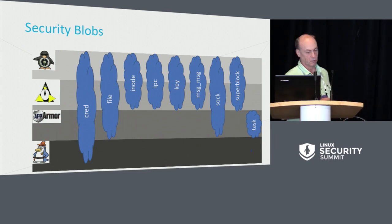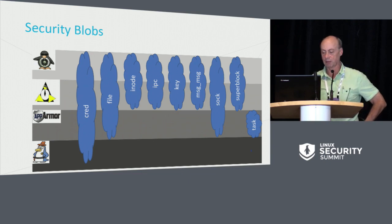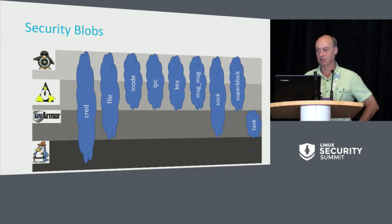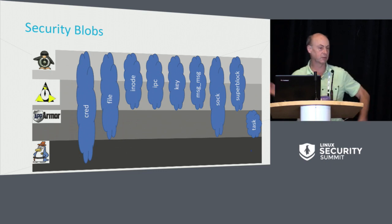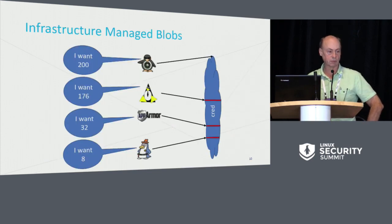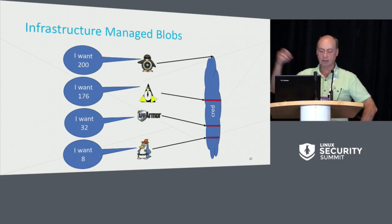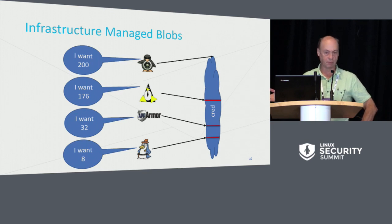The security blob usage is actually pretty uniform. It turns out that SELinux and SMAC use them all. Tomoyo only uses the credential blob. AppArmor uses the credential blob, the file blob, the socket blob, and the task blob. So with this set of blobs, if AppArmor and SMAC or AppArmor and SELinux want to use the same blob, they can't because they're pointing to the same place. The resolution is fairly simple — rather than having the individual security modules manage the blobs themselves, they just tell the security infrastructure how much space they want in each of the blobs, and the infrastructure keeps track of what everybody wants and tells them where within the blob they should find their information.